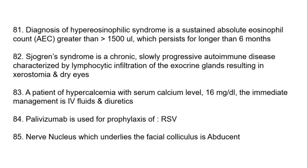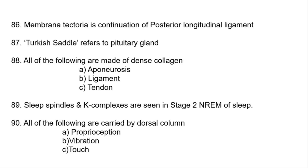The nerve nucleus which underlies the facial colliculus is the abducent nerve. Membrana tectoria is a continuation of the posterior longitudinal ligament. 'Turkish shadow' refers to the pituitary gland. Aponeurosis, ligament, and tendon are all made up of dense collagen. Sleep spindles and K-complexes are seen in stage 2 NREM sleep.